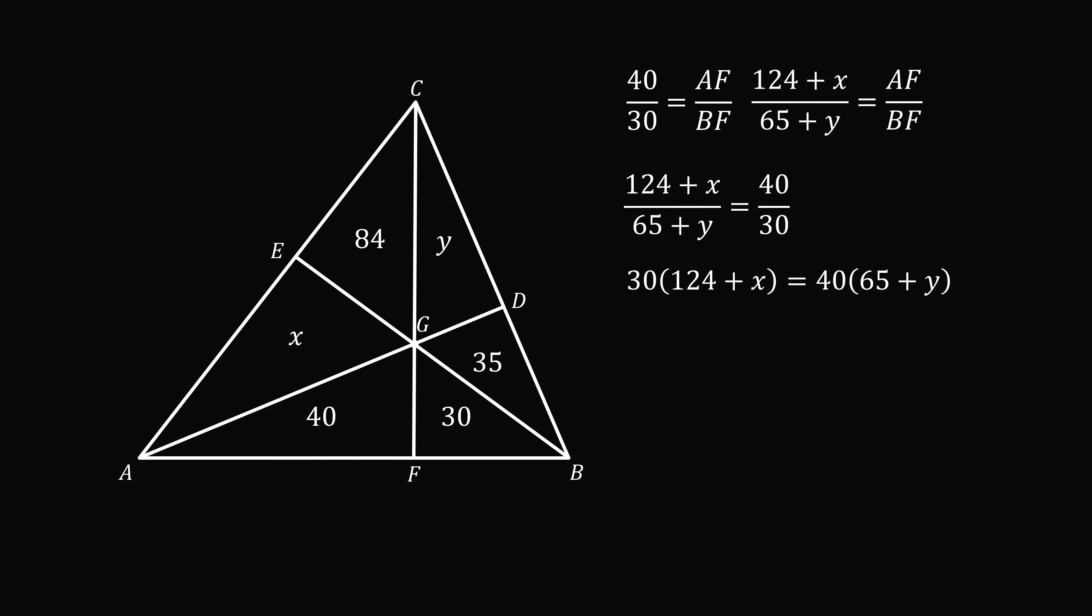We can cross multiply. Now let's divide both sides of this equation by 10, and then distribute. This results in the equation 372 plus 3x equals 260 plus 4y. We will simplify this to 112 plus 3x equals 4y.